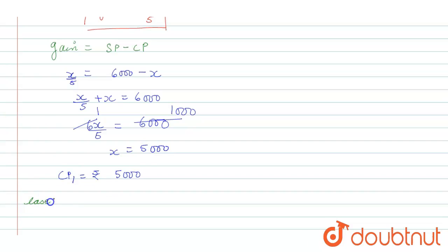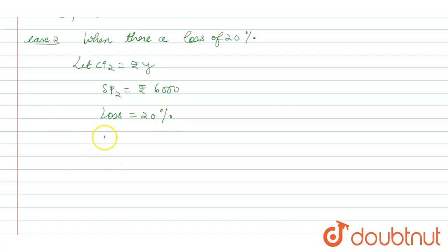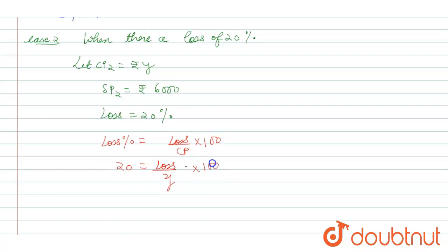Now Case 2: when there is a loss of twenty percent. Let CP2 be rupees y and SP2 is rupees six thousand. Loss percent is calculated as loss upon CP into 100. So twenty equals loss upon y into 100, giving a loss of y by 5 rupees.